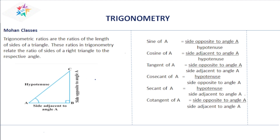There are six main ratios of trigonometry. Sine A is equal to opposite side by hypotenuse.